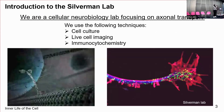So, introduction to our lab. We are a cellular neurobiology lab focused on axonal transport, and we employ three main techniques in cell culture, live cell imaging, and cytochemistry. Here, a picture on the bottom right is an example of an immunocytochemical image showing dense core vesicles, which are KIF1A cargo.